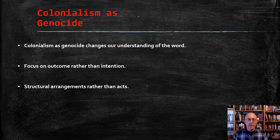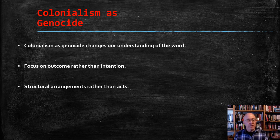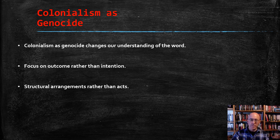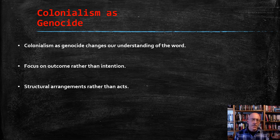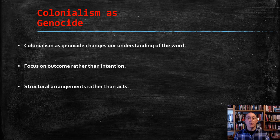The idea of settler colonialism as being inherently genocidal is, I think, a very powerful argument, and one of the most important developments in the scholarship of this topic in recent years. But we also need to acknowledge that it changes our understanding and the meaning of the word. According to the official definition of genocide, the focus is on intention — there has to be genocidal intention to start. But the focus in settler colonialism literature is more on the outcome rather than on the intent, and more about certain structural arrangements than on whether or not there was any specific plan to destroy a population.